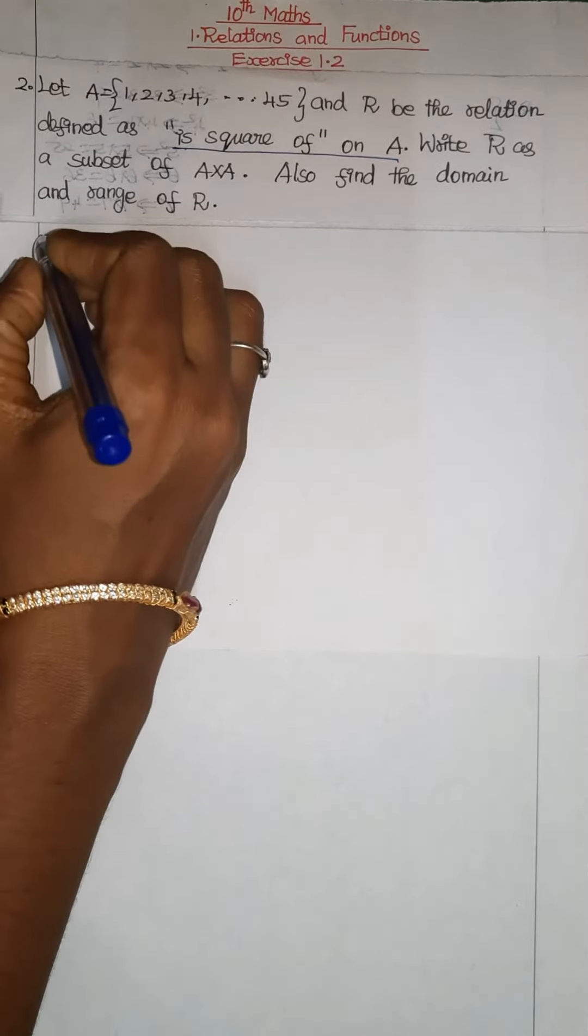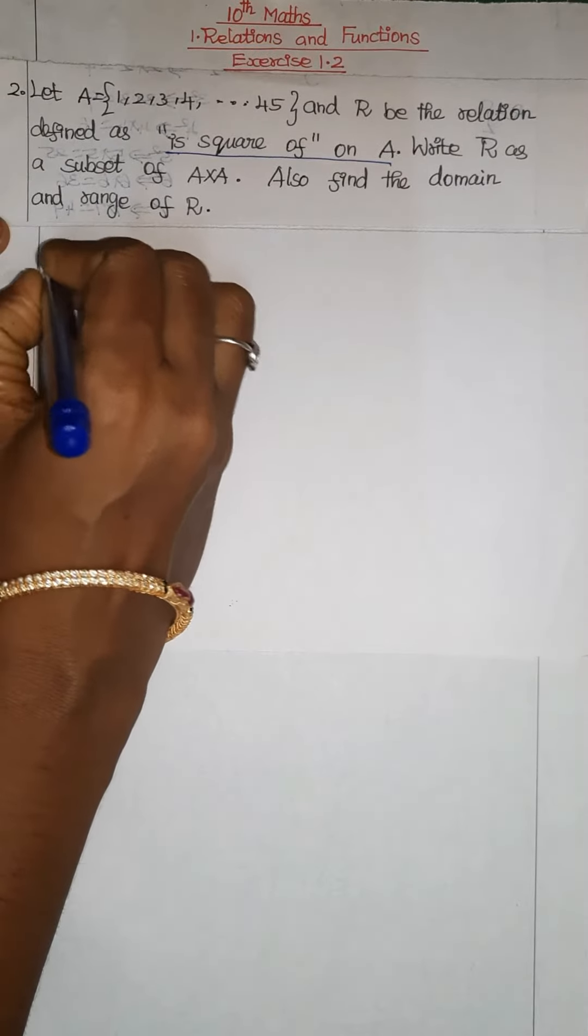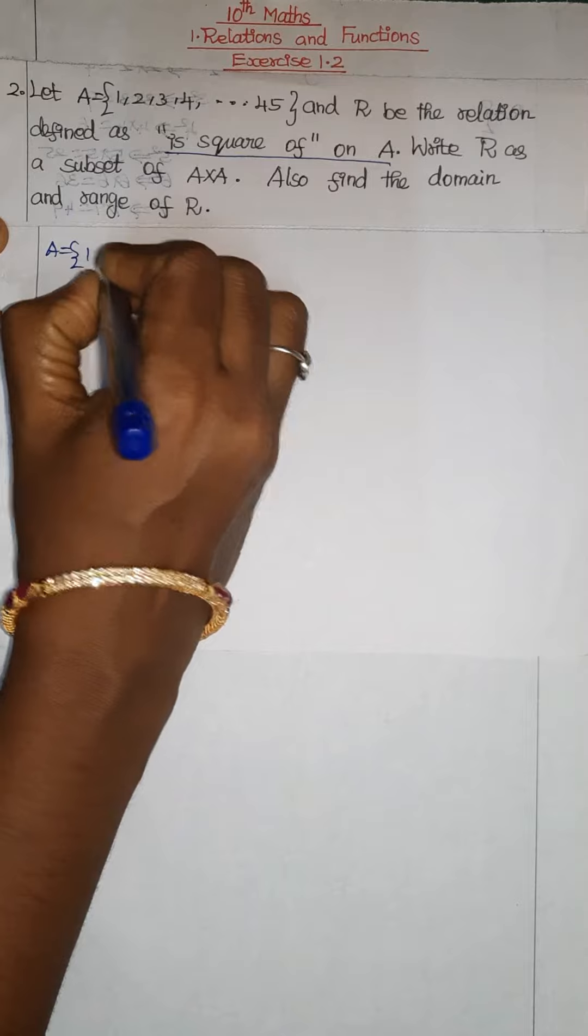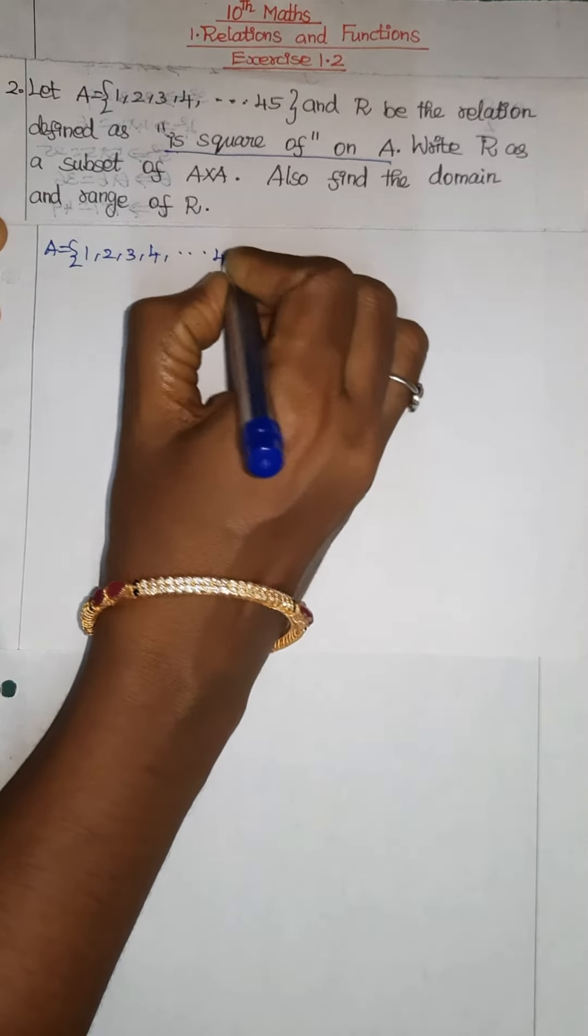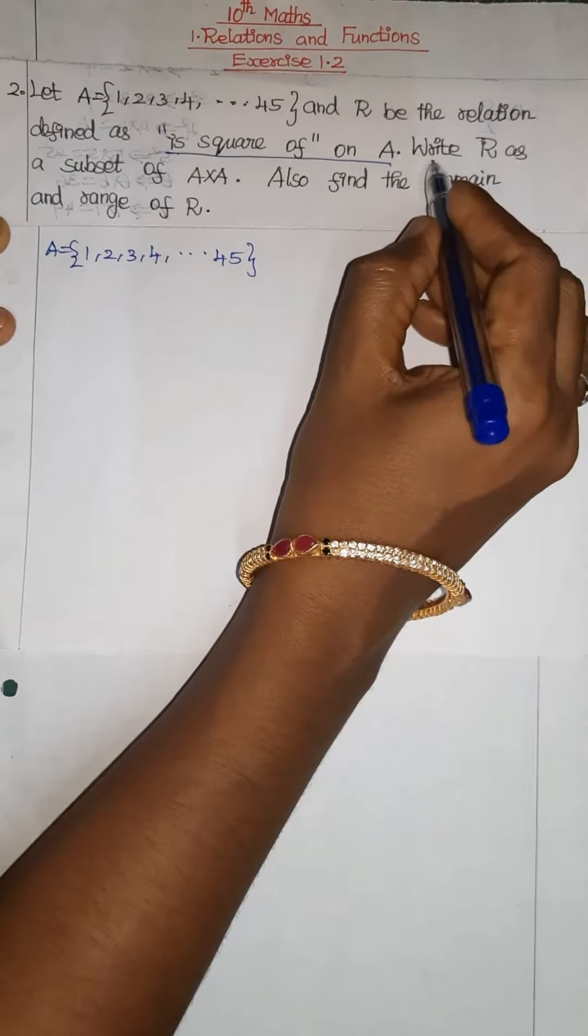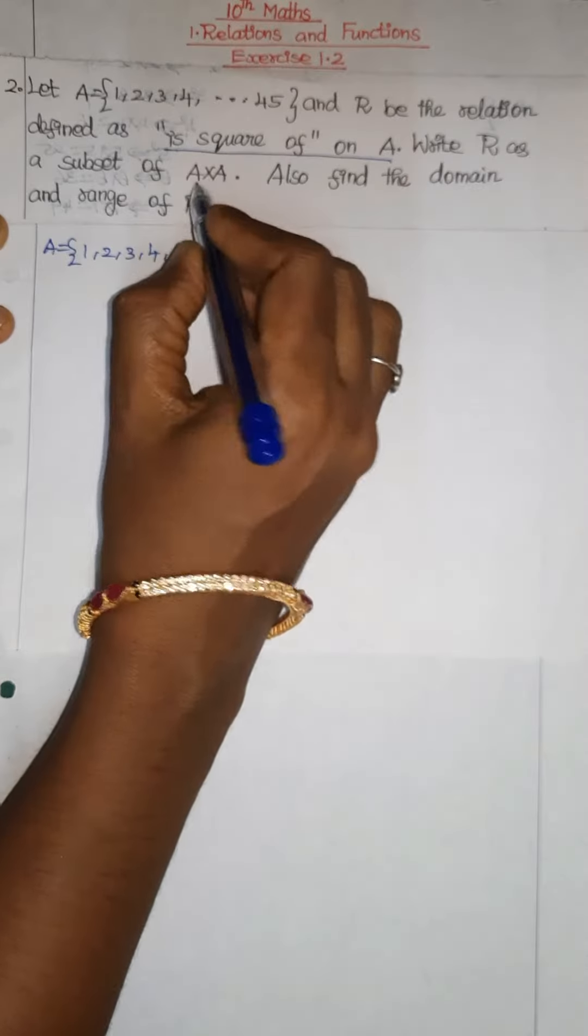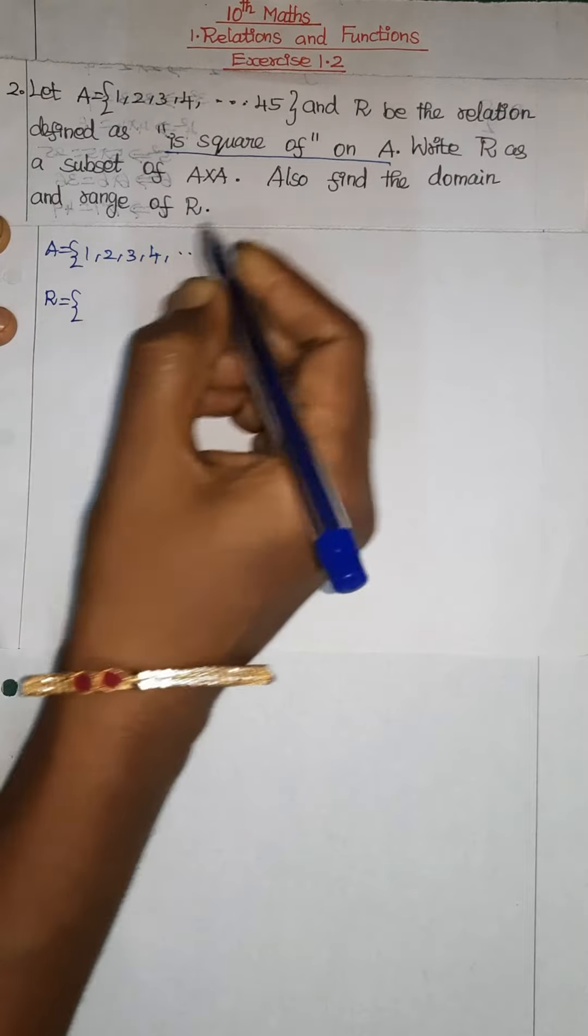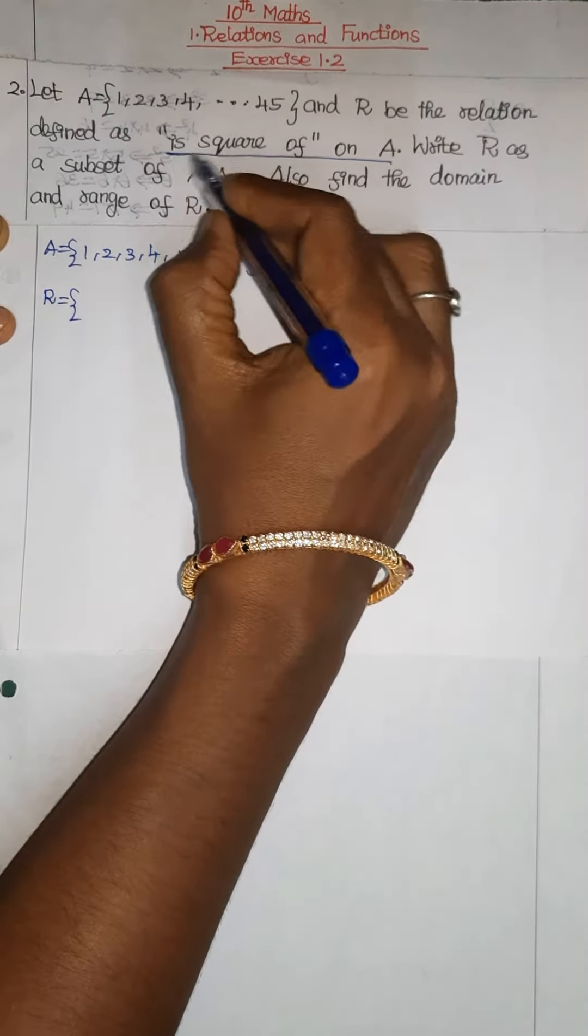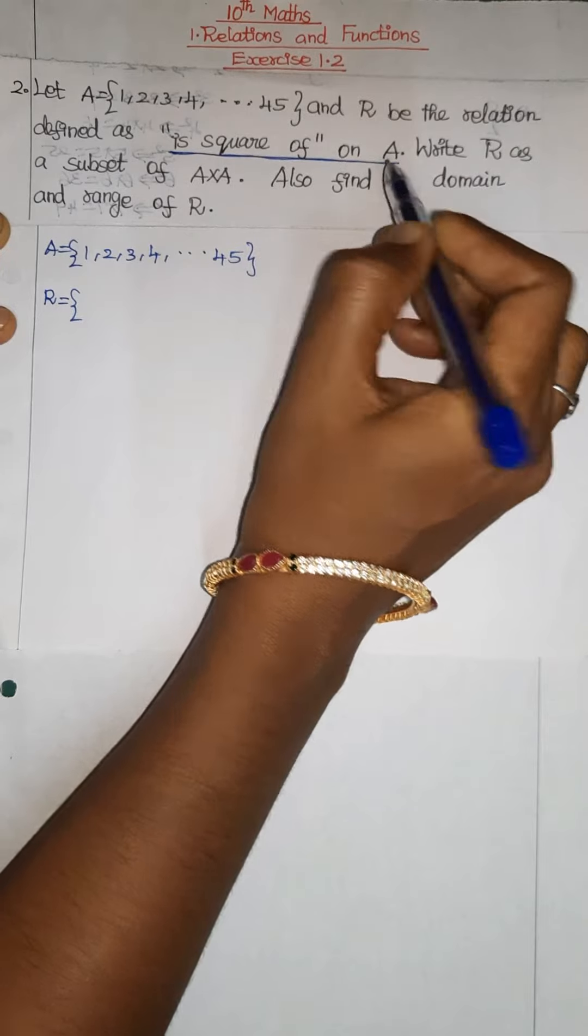Question line number: A is equal to 1, 2, 3, 4, up to 45. Second line: R is a subset of A cross A. That means first relation find out to be done. Some condition is square of on A. Is a square of on A means set A elements or number squares find out.